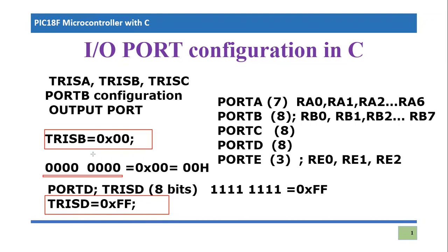These are the two different possible modes or configurations by which you can make any port either input or output. TRISB = 0x00 is for output, and TRISD = 0xFF is for input. This instruction format can be used in any C language program when configuring a PIC 18F microcontroller. I hope in this tutorial we have learned the correct way of configuring ports connected to a PIC 18F microcontroller in C language. If you have any questions, please post them in the comment section. Thank you so much for listening.